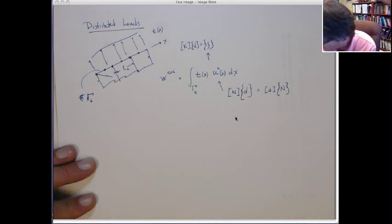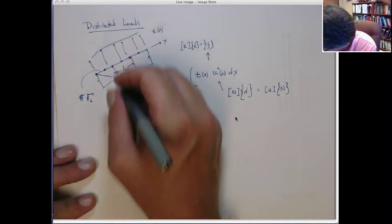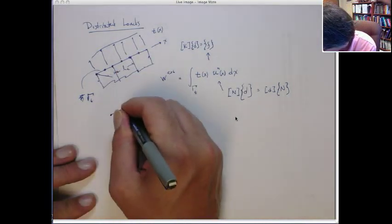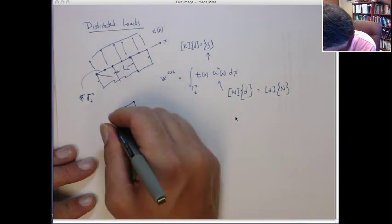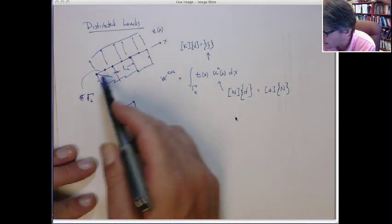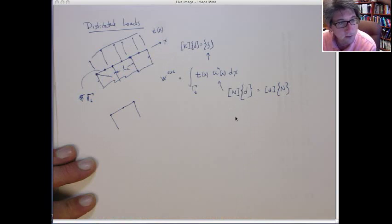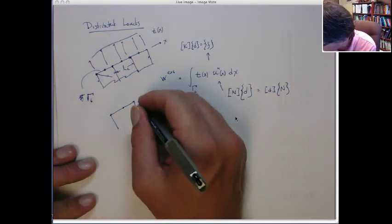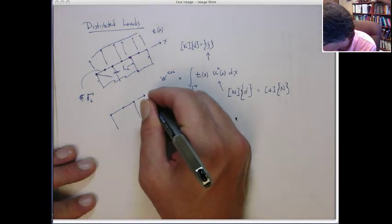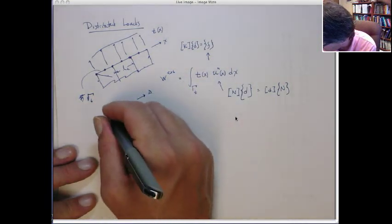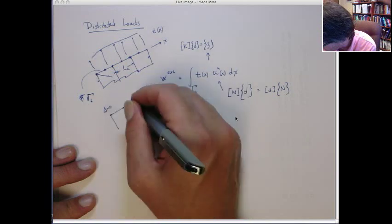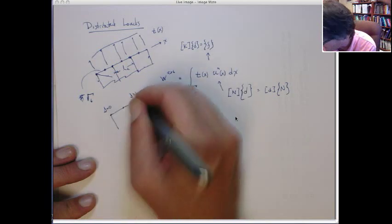Now, it's also a little difficult. Let's just look at this element. It's a little difficult to deal with a global coordinate system X. So I'm going to do a local element coordinate system transformation. So I'm going to define a coordinate system S where at one node S is 0 and at the other end of the element S is 1.